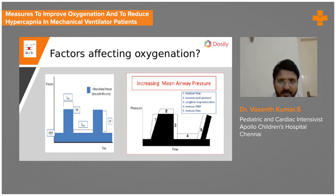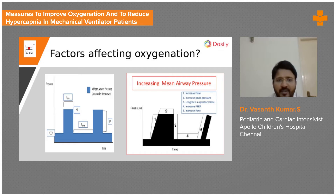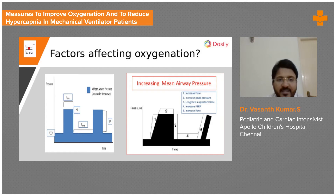By increasing the mean airway pressure, we can increase oxygenation. One way is to increase the PEEP — the baseline can be raised, giving more area below the curve. So increasing PEEP is the first option.